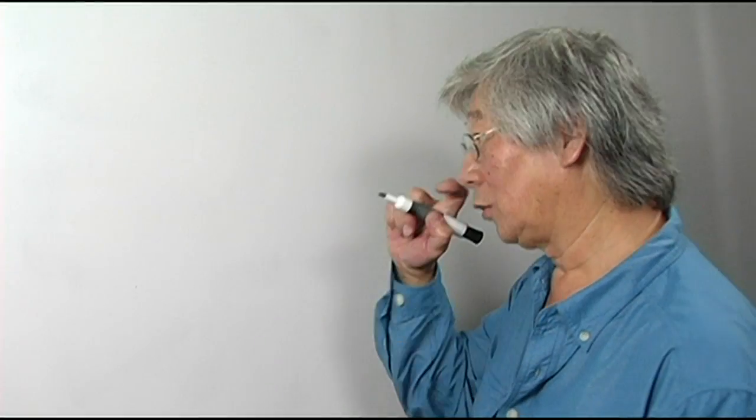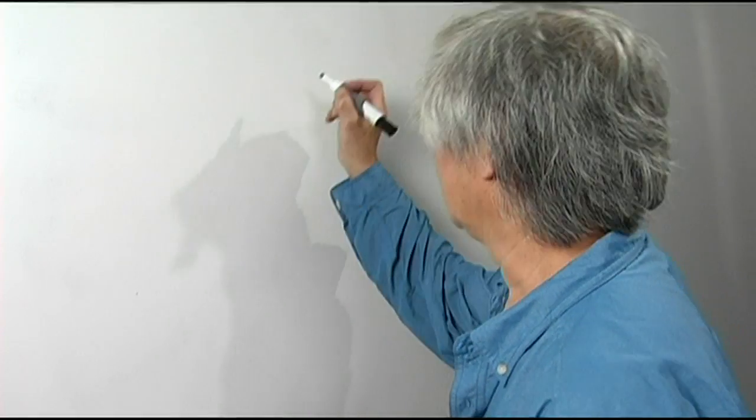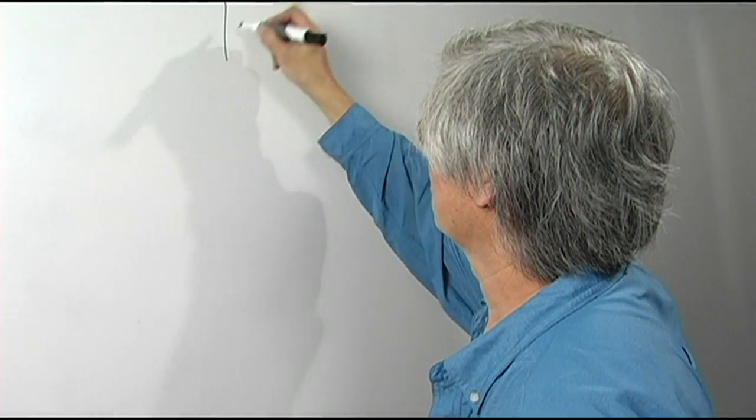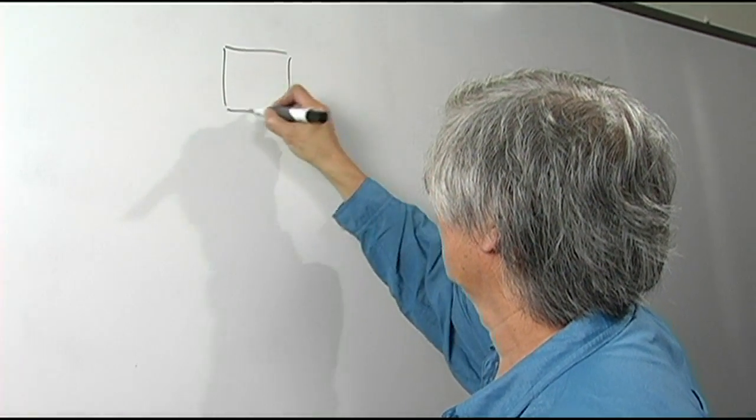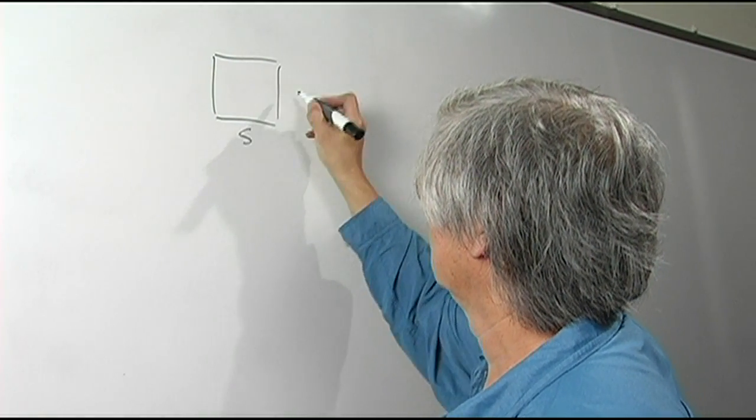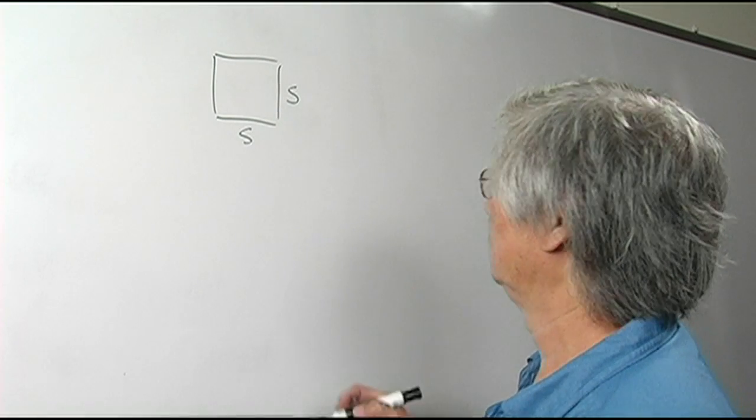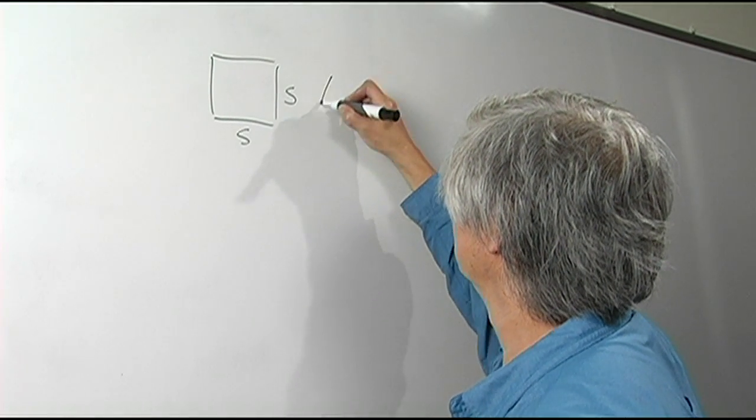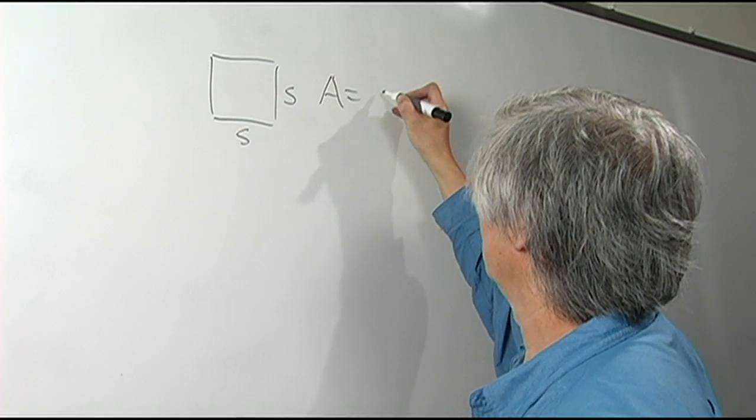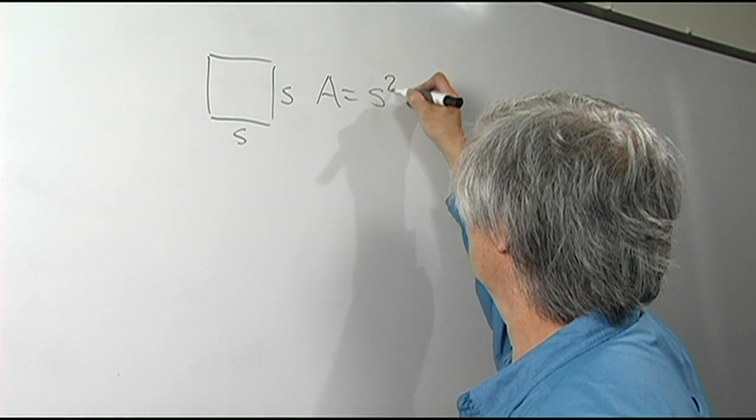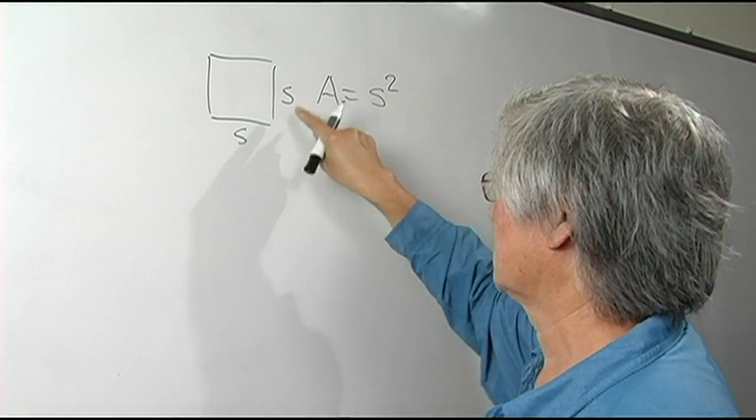What we're going to talk about is radical or radical sign. The area of a square with side S is represented by S squared. Let me draw this first. The side is S and of course being a square, all the sides are equal. The area is S squared or S times itself.